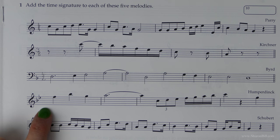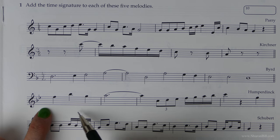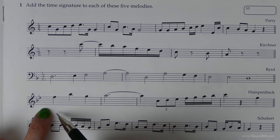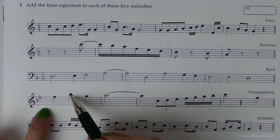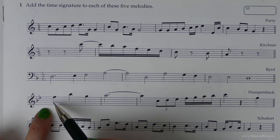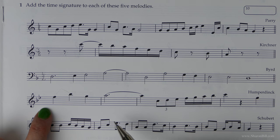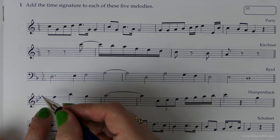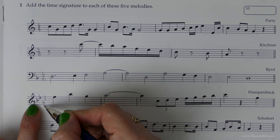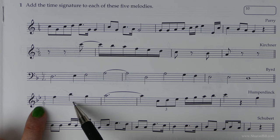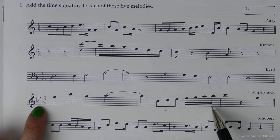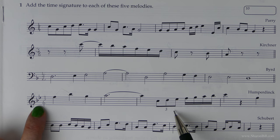Next one. This first bar gives us the answer nice and easily. We're counting in crotchet beats again. You can see that it wouldn't work if we were counting in minim beats or half notes, because that would be one and then we'd only have half left. We haven't got enough per bar. This bar tells us straight away that we're counting in three crotchet beats per bar. One, two, three. One, two, three. So three over four.